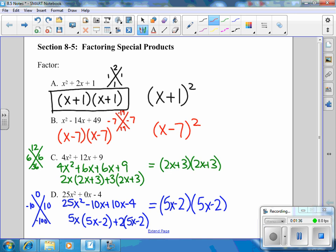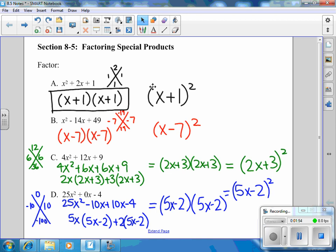And guess what? We can do that for the next two. 2x plus 3 times 2x plus 3 is really 2x plus 3 all squared. And the same thing for the last one. This can really be written as 5x minus 2 all squared. So hopefully you got all of those correct. And now we can notice our patterns.